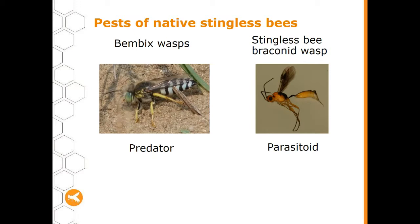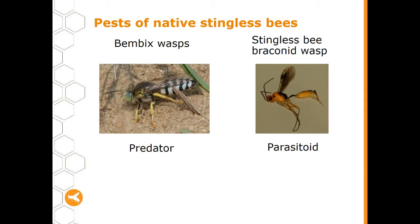There are also pests that attack bees while they're out and about. Vembix wasps are predators — they catch and eat your bees. There's also the stingless bee braconoid wasp, which is a parasitoid: it lays its eggs inside the live bee, and the larvae hatch and develop inside the live bee — pretty gross but a nasty pest. At the end of tonight's talk, consider joining your local branch of the Australian Native Bee Association for more information.